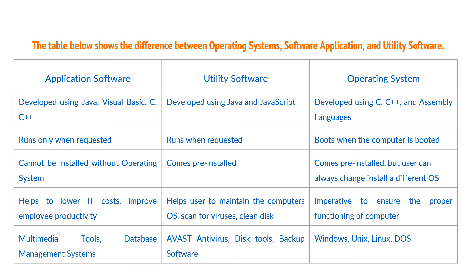The application software and utility software run only when requested, and the operating system boots when the computer is booted. Application software cannot be installed without an operating system. Utility software comes pre-installed, and the operating system also comes pre-installed, but a user can always change and install a different operating system.